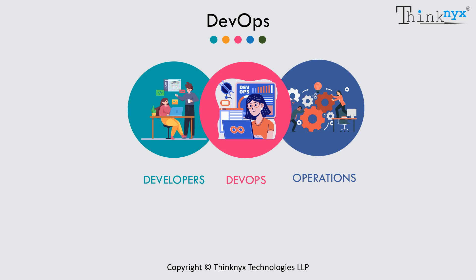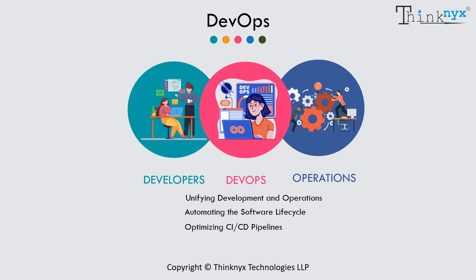DevOps was introduced to address this gap by fostering collaboration between these two teams. DevOps engineers specialize in automating and optimizing the software development process. They work on CI/CD pipelines to ensure code changes are automatically tested, integrated, and deployed. This approach enables faster, more reliable software delivery with fewer errors.